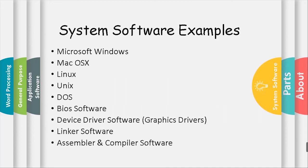Examples of system software include Microsoft Windows, Mac OS X, Linux, Unix, DOS, BIOS software, device driver software, linker software, and assembler and compiler software.